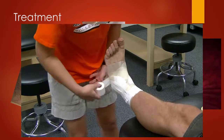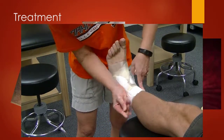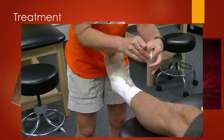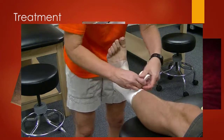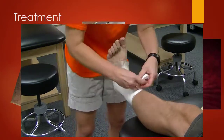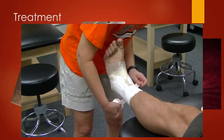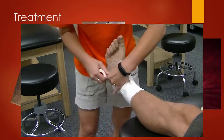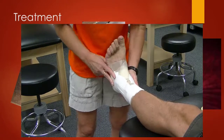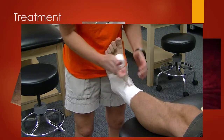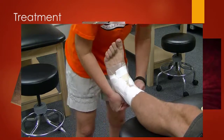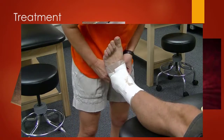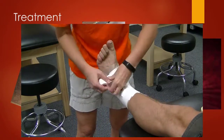The open basket weave is not a functional tape job, meaning you don't want someone practicing with this. What you want to use it for is simply to give some support to that athlete. You can include heel locks if you want to give a little more support to the lower part of the foot, but otherwise you want to leave a spot for that swelling to take place.